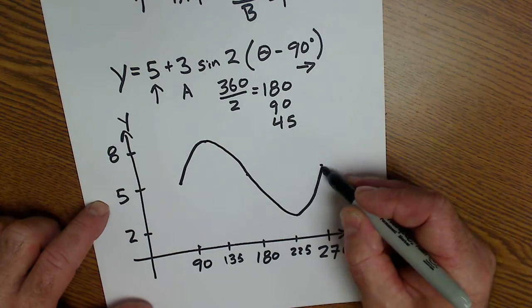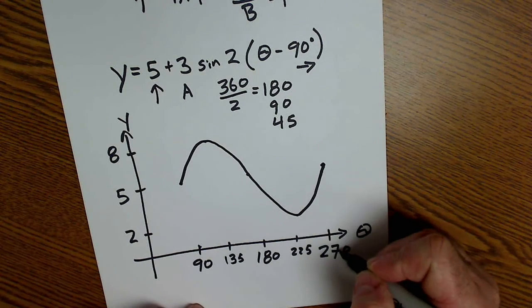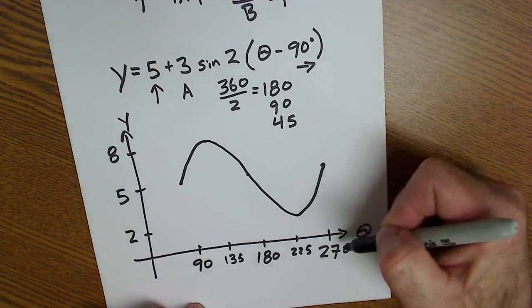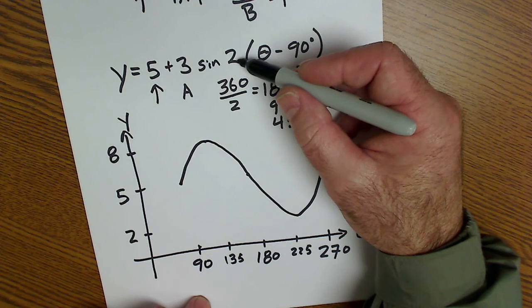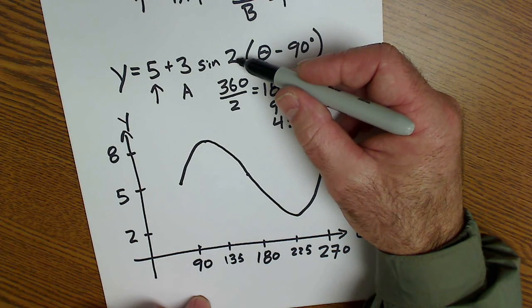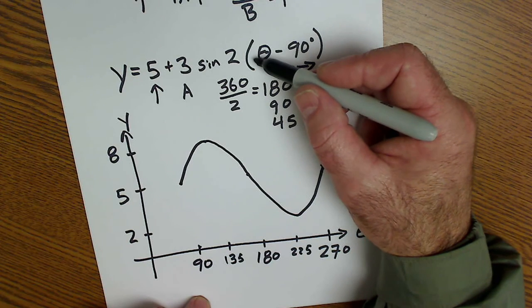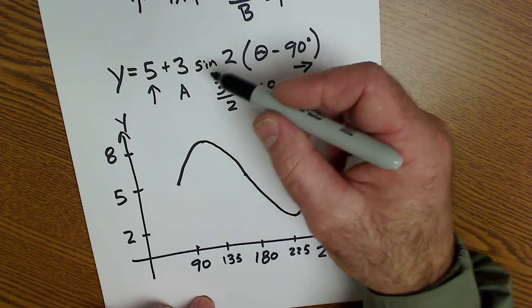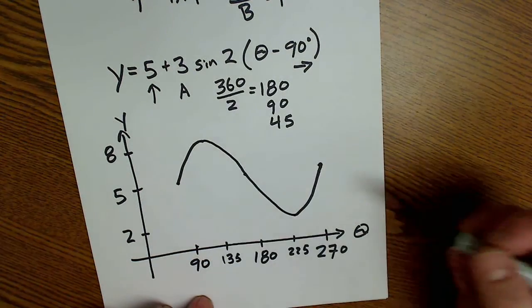Connect the dots, and there's my sine graph. I want to pick a point, an easy point like 270, and plug it in to make sure I graphed it correctly. 270 minus 90 is 180, times 2, 360. Sine of 360, if you remember that, is 0. So 270 should be 5.